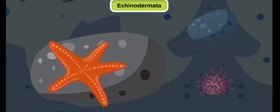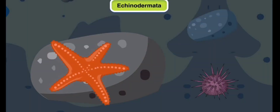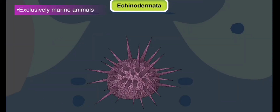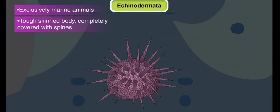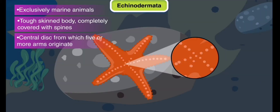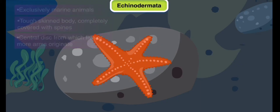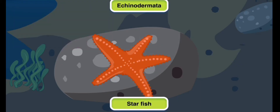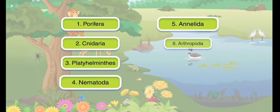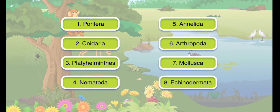Phylum Echinodermata: Echinoderms are exclusively marine animals. They have a tough-skinned body completely covered with spines. They usually have a central disc from which five or more arms originate. Starfish is an example of echinoderms. These eight phyla make up the group invertebrates.